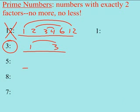Let's try 5. 1 times 5 is 5. Does 2 go into 5? No. Does 3 go into 5? No. Does 4 go into 5? No. So my factor rainbow is done. I have exactly two factors. I know it's prime.